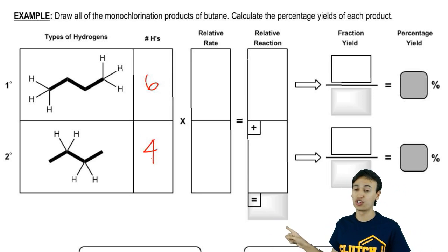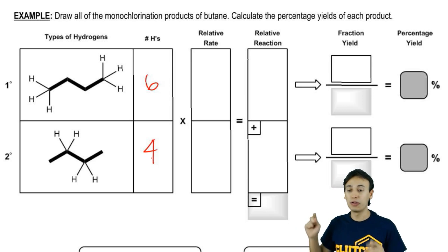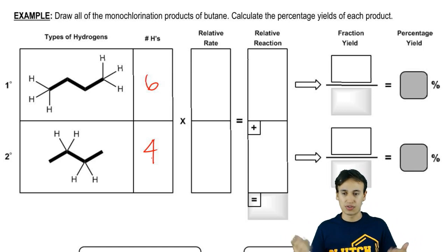Notice that there's no slot for tertiary because there's no tertiaries here. But if I did have tertiaries, I'd have to add another row. Makes sense. Awesome.